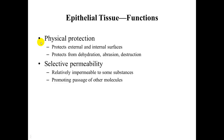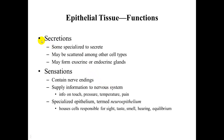The functions of epithelial tissues are varied. One function is physical protection — it protects external and internal surfaces from dehydration, abrasion, and destruction. They are also selectively permeable, being relatively impermeable to some substances while allowing the passage of other molecules. They can function in secretion; some are specialized to secrete specific chemicals, may be scattered among other cell types, and can form exocrine or endocrine glands. They can also be used in sensation, containing nerve endings that act as receptors supplying information to the nervous system.